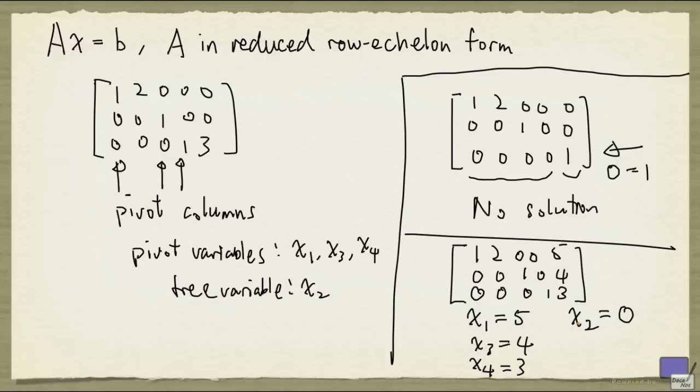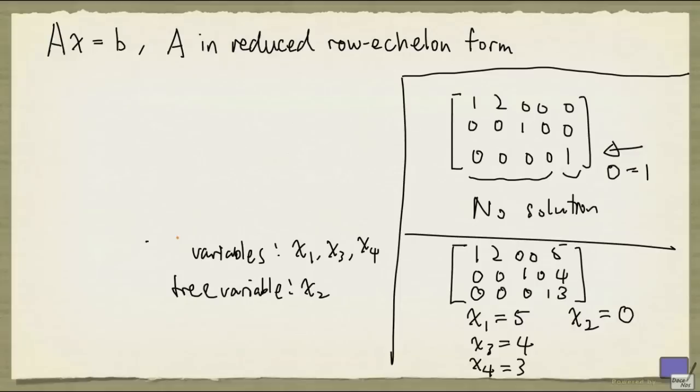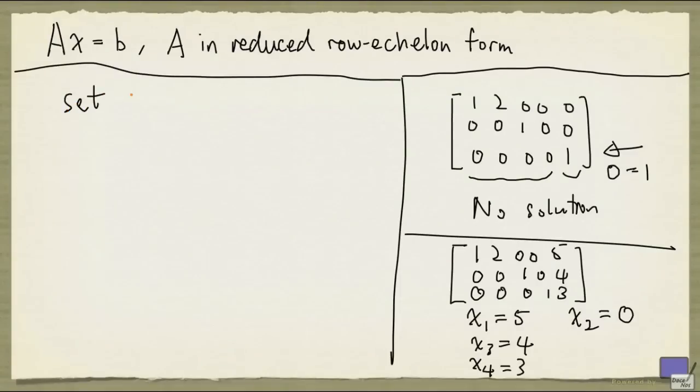Now notice that we can set x2 to any value. If we set it to a parameter s, we'll be able to express all possible solutions to the system represented by this augmented matrix. So we set x2 to s, and now the first row gives us x1 plus 2s equal to 5. The second row will give us x3 equal to 4, and the third row, x4 equal to 3.